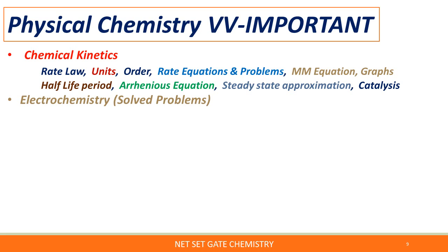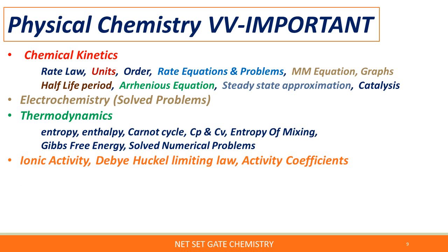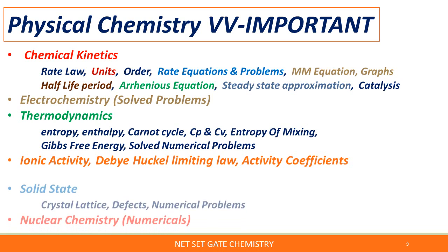Steady-state approximation and catalysis topics you have to also cover for chemical kinetics. For electrochemistry, focus mainly on solving numerical problems, particularly the Debye-Hückel limiting law. Numerical electrochemistry problems are expected in the exam. In thermodynamics — entropy, enthalpy, Carnot cycle, Cp and Cv, entropy of mixing of gases, Gibbs free energy — numericals based on thermodynamics are preferably asked. Ionic activity, activity coefficients, and Debye-Hückel limiting law are also very important.